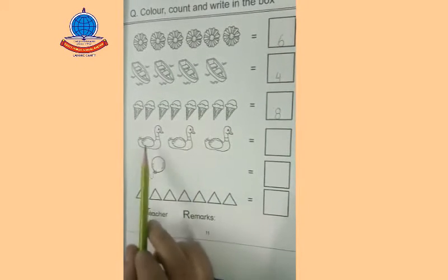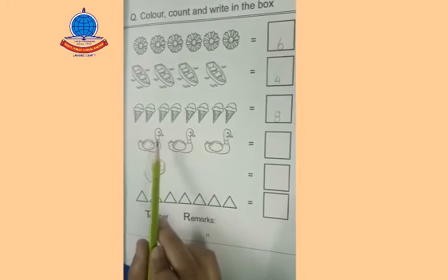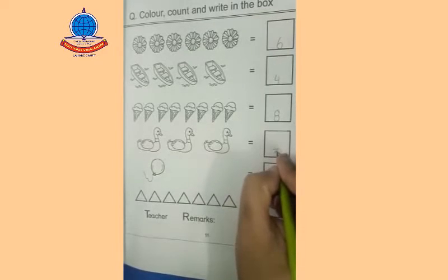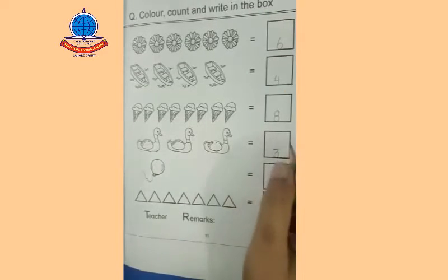Okay next, what is our next object? There are ducks. Count them: 1, 2, 3. Write three here.